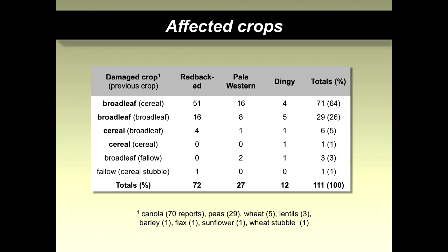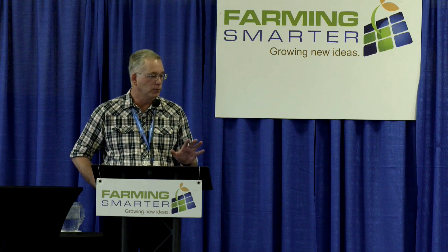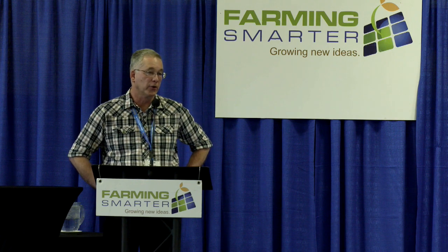Focusing on the three most common species, they were reported in 111 of the 124 reports. In 64% of cases, outbreaks occurred in a broadleaf crop in a field that was planted to cereals the previous year, mainly due to redback cutworm. About 26% involved damage in a broadleaf crop planted after a broadleaf crop. The primary broadleaf crops affected are canola and pea, with some reports in wheat, lentils, barley, flax, sunflower, and wheat stubble. In general, cutworm outbreaks are most likely to occur in a canola field planted to wheat the previous year.